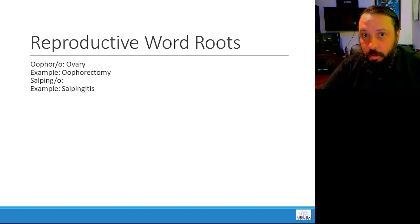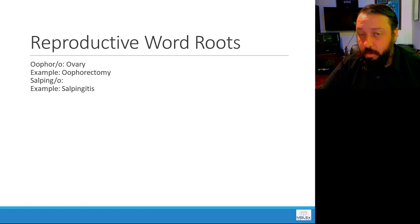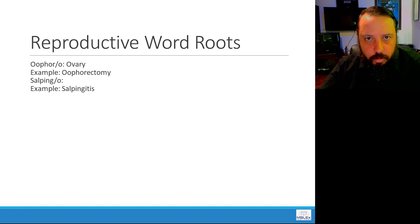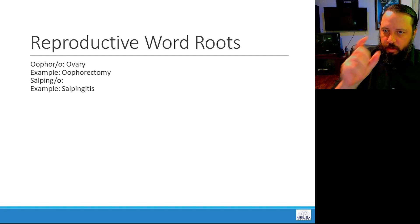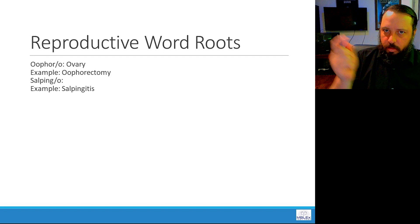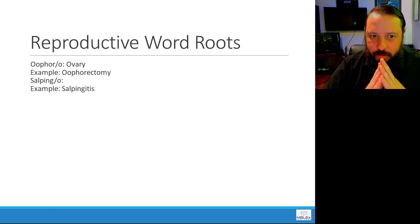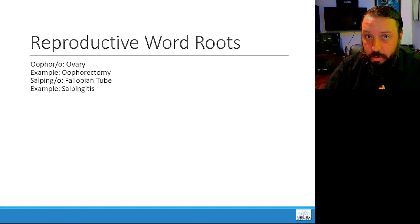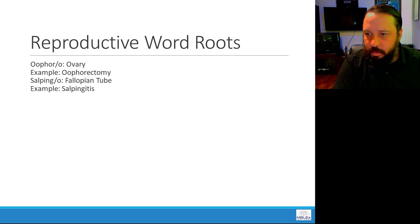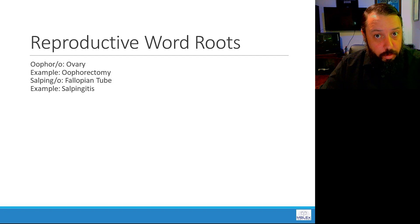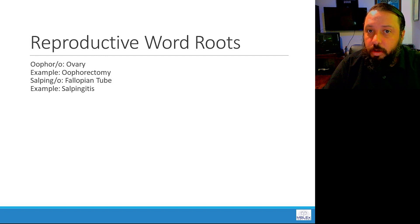Finally, salpingo — as in salpingitis, inflammation of a fallopian tube, or salpingectomy, surgical removal of a fallopian tube. A salpingectomy can be performed alongside a hysterectomy. The fallopian tube connects each ovary to the uterus and is the passage through which the egg cell travels on its way to the uterus. So salpingo means fallopian tube.